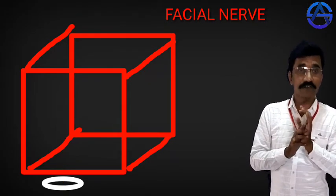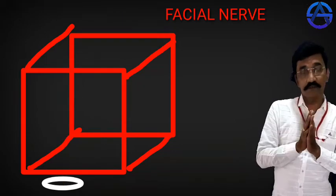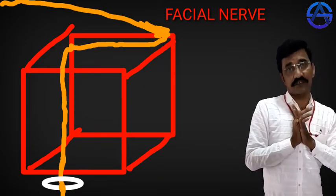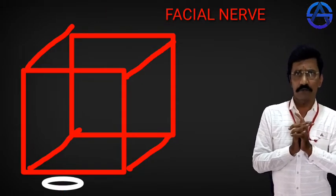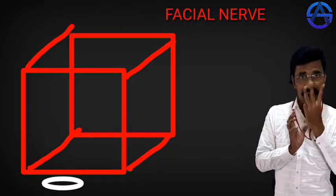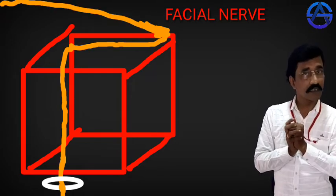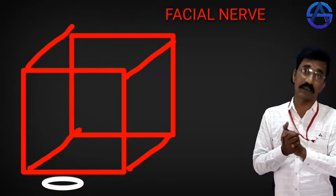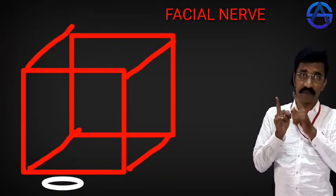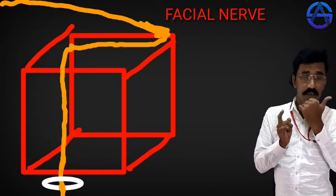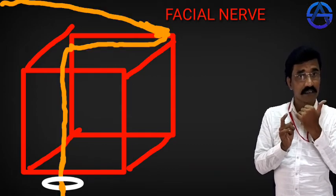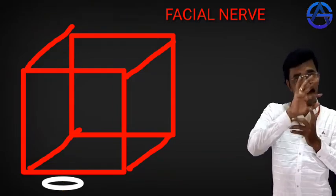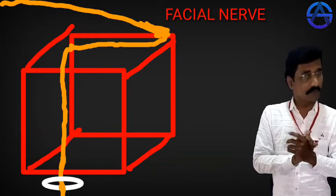Now regarding pain, touch, and temperature: the main nerve for pain is the trigeminal nerve, and there is a nucleus called the spinal nucleus of the trigeminal nerve. The fibers for pain, touch, and temperature from the facial nerve reach the trigeminal nerve nucleus. This is how the different nuclei give origin to the different fibers.